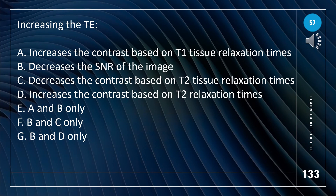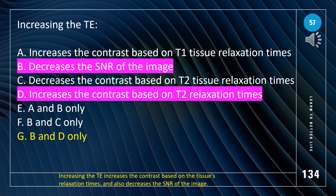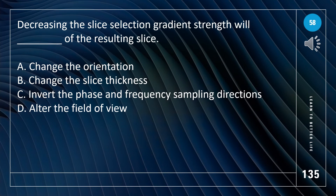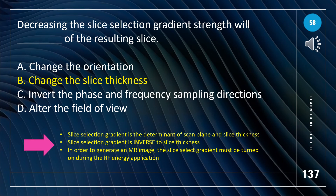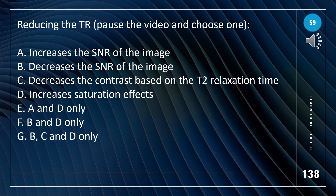Increasing the TE has what following effects? The answer is B and D only: decreases the SNR of the image, and increases contrast based on T2 relaxation times. Decreasing the slice selection gradient strength will have what effect? The answer is B: change the slice thickness. Remember, slice selection gradient is the determinant of scan plane and slice thickness; slice selection gradient is inverse to slice thickness.